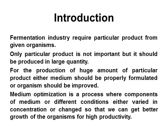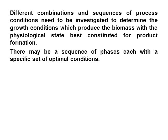The fermentation industry requires a particular product from given organisms. Only a particular product is not important, but it should be produced in large quantities. For the production of a huge amount of a particular product, either the medium formulation must be proper or there should be improvement in the organism. Medium optimization is a process where components of the medium or different conditions are either varied in concentration or changed so that we can get better growth of organisms for high productivity. Different combinations and sequences of process conditions need to be investigated to determine the growth conditions which produce the biomass with the physiological state best constituted for product formation. There may be a sequence of phases, each with a specific set of optimal conditions.